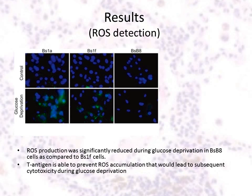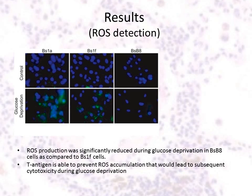Therefore, we concluded that ROS production during glucose deprivation may play a role in T antigen downregulation.